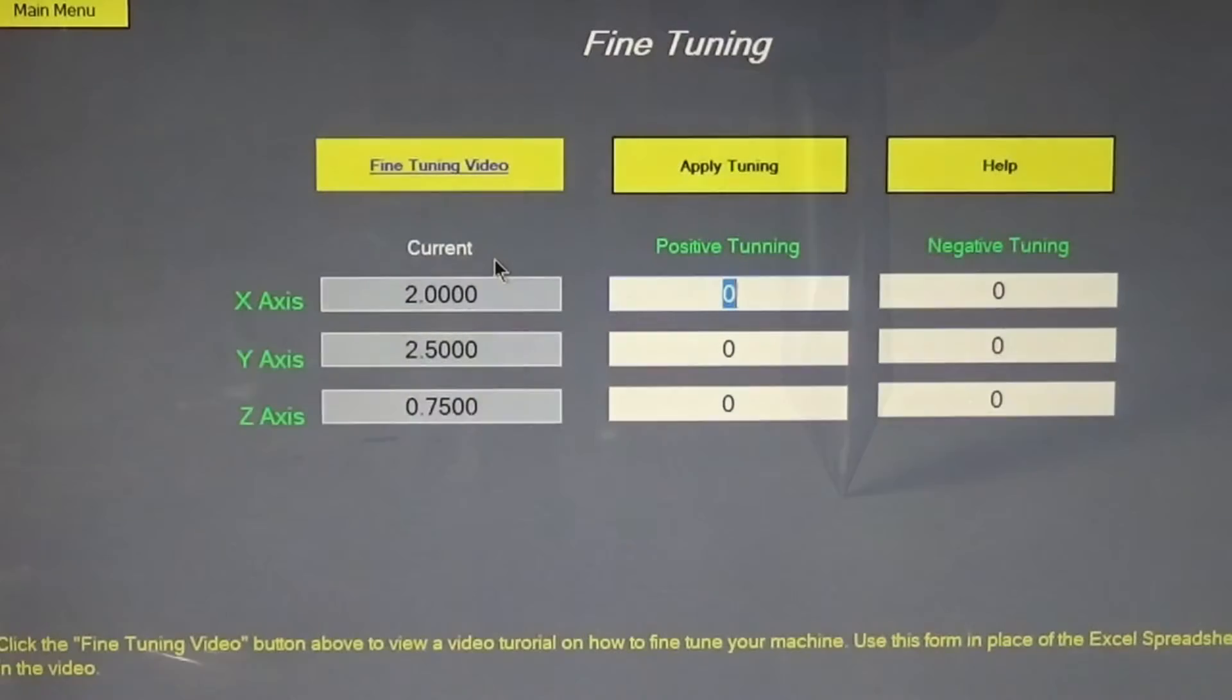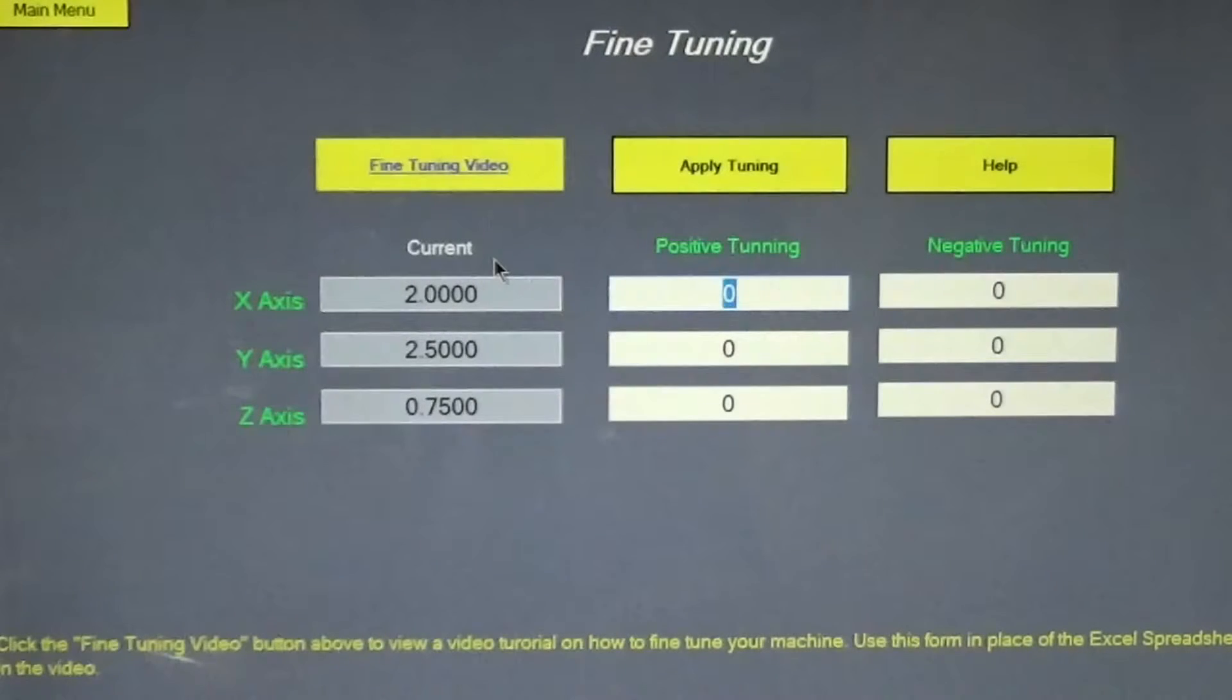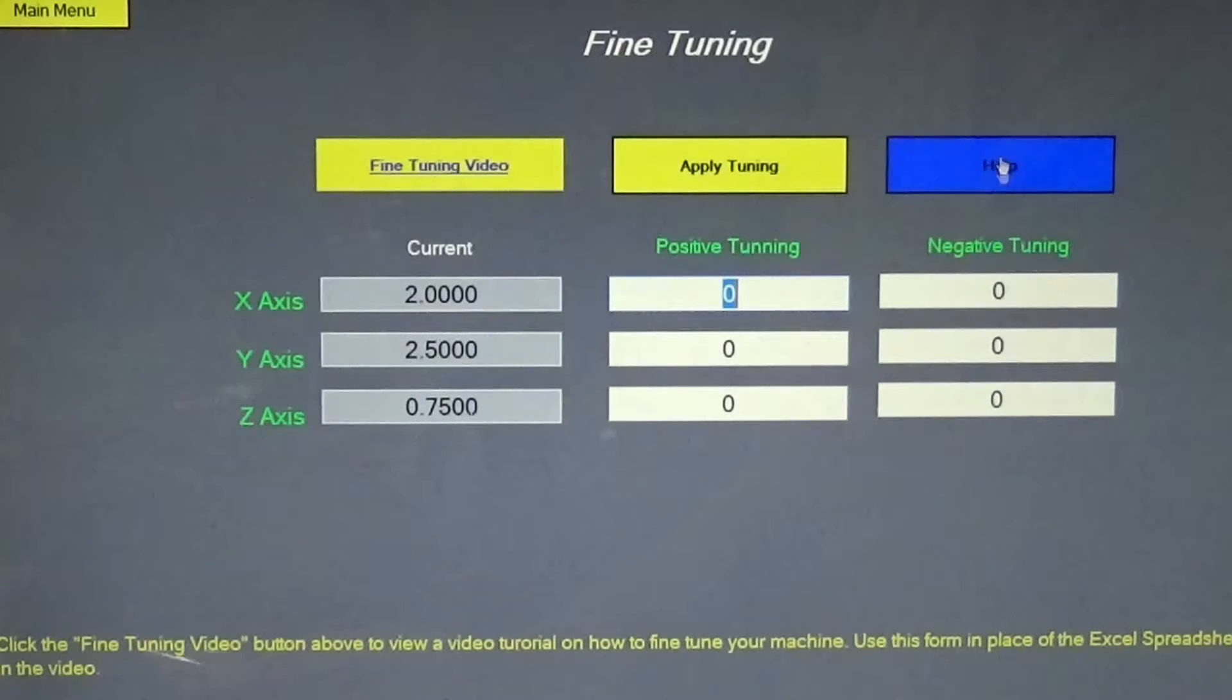Okay, we're back in the TriQuetra Toolbox in the fine-tuning page. Here's the numbers that I wrote down. I'm going to enter those into the spreadsheet in the right columns. So for the x-axis we moved negative 0.03, so I'm gonna go up here in the negative column and enter in 0.03. In the y column we moved a positive 0.04, so under the positive column for the y-axis, 0.04. And for the z-axis we were also in the positive and it was 0.02. So those are the corrections we made to get the bit actually positioned at XYZ zero.